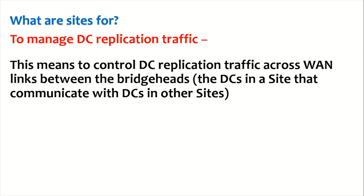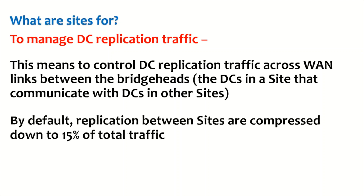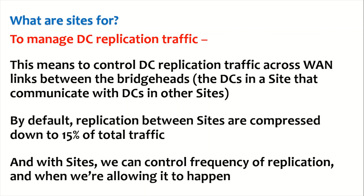The second reason to create an active directory site is to manage domain controller replication traffic — to control replication traffic across the internet between bridgeheads. By default, replication between sites is compressed down to 15 percent of the total traffic. Additionally, with sites we can control the frequency of replication; for example, we can restrict replication during peak hours like 10 a.m. to 2 p.m.